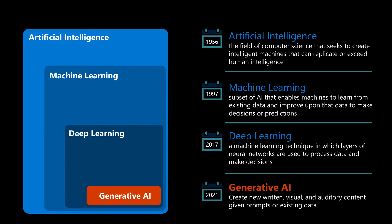And so, we arrived at Generative AI, a subset of deep learning. After decades of AI research, a new model architecture known as the Transformer emerged. Transformers could handle longer text sequences as input and were based on the attention mechanism, enabling them to focus on the most relevant information, regardless of its order in the text. Today, most generative AI models, often referred to as large language models, are built upon the Transformer architecture.